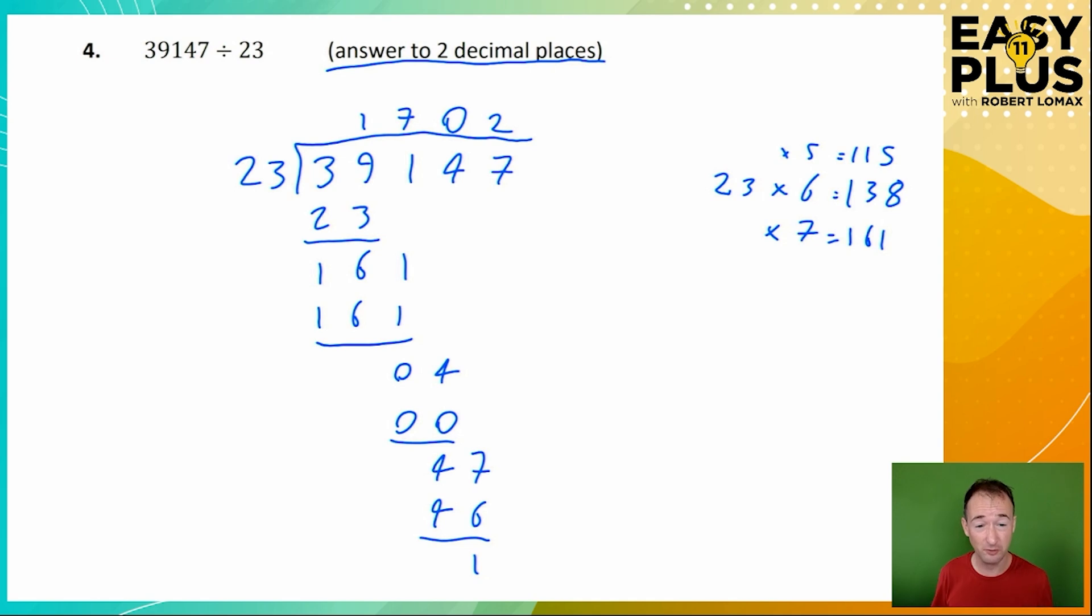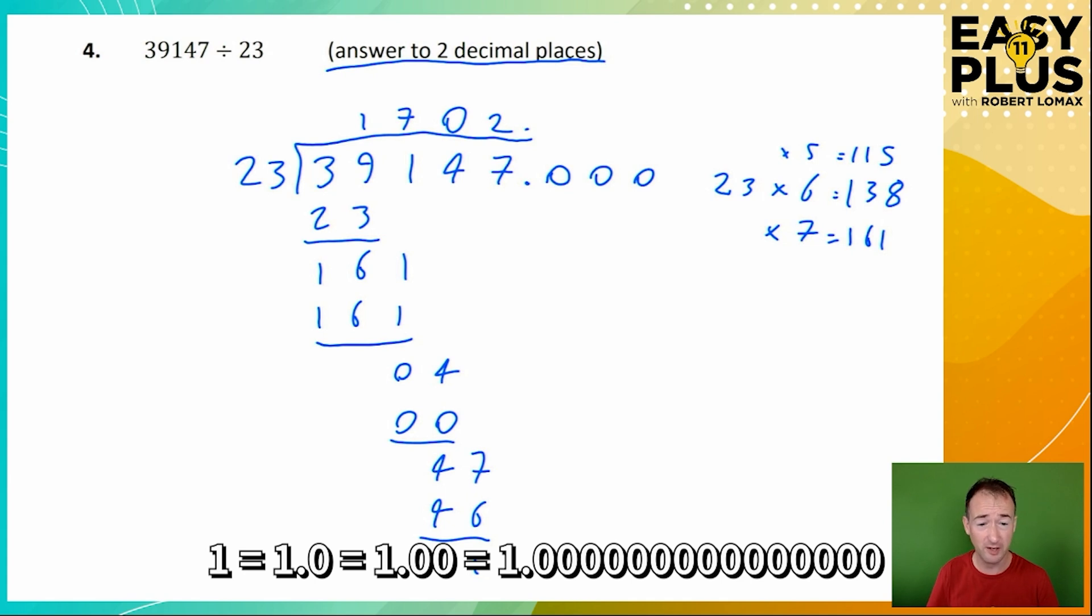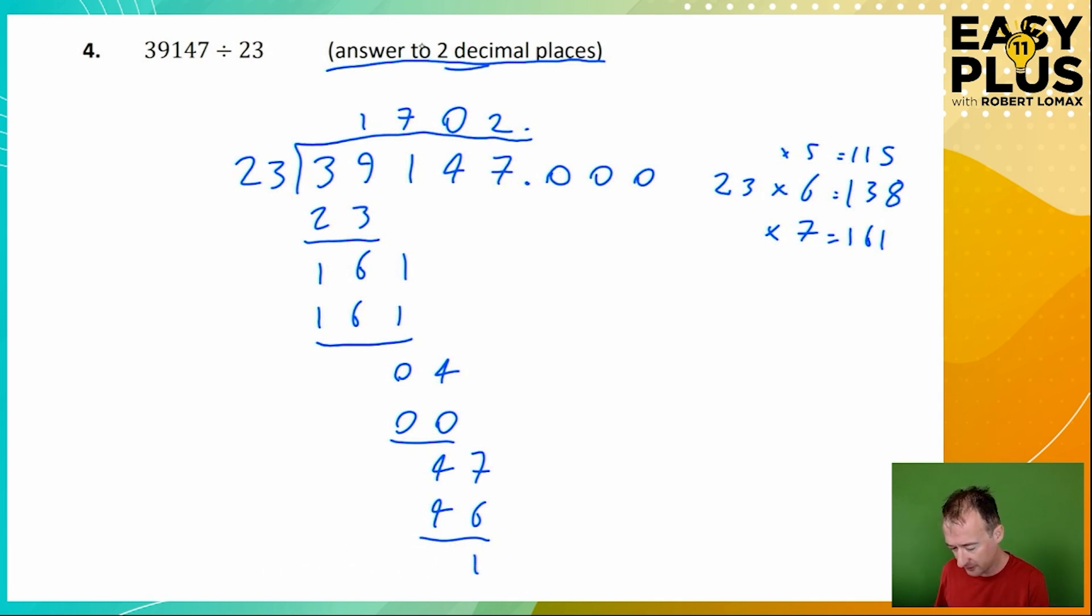If you get to the end of a division problem, and you haven't found a neat answer, and you need to continue, we put a decimal point here, and another one here, and we start adding zeros. Now, here's the point where, if you aren't completely comfortable with rounding, you may not completely understand what I'm doing, but I'll do my best to explain it. So we're going to add three zeros here. For a start, it's important to remember that you can add as many zeros after a decimal point as you want, without changing the value of a number. 1 is the same as 1.0, it's the same as 1.00, it's the same as 1.0000, and so on, as long as they're all zeros, because 0.0 means and nothing else.